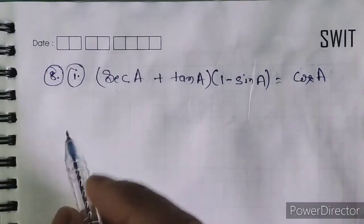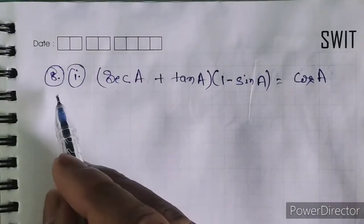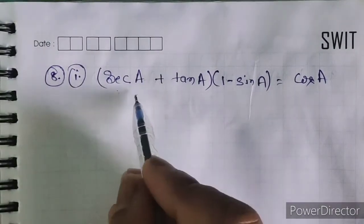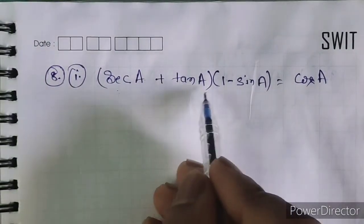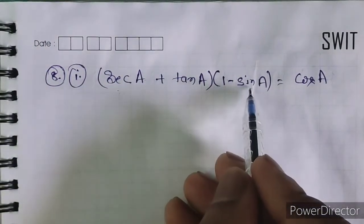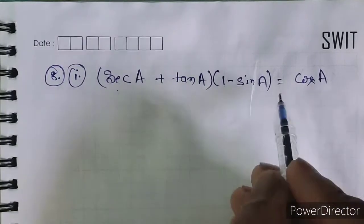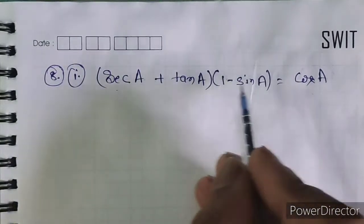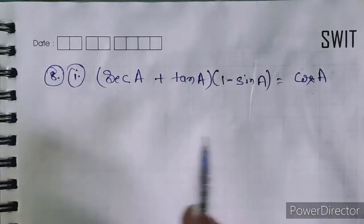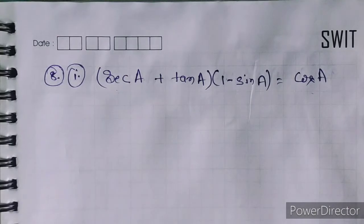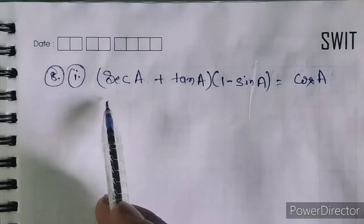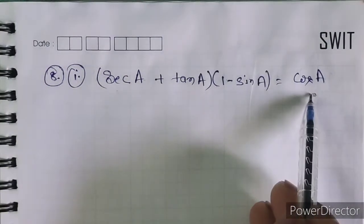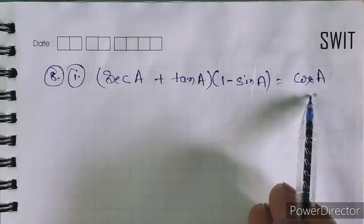Question number 8: prove that sec A plus tan A minus (1 - sin A) equals cos A. This is a trigonometry proving question — we need to show LHS equals RHS.